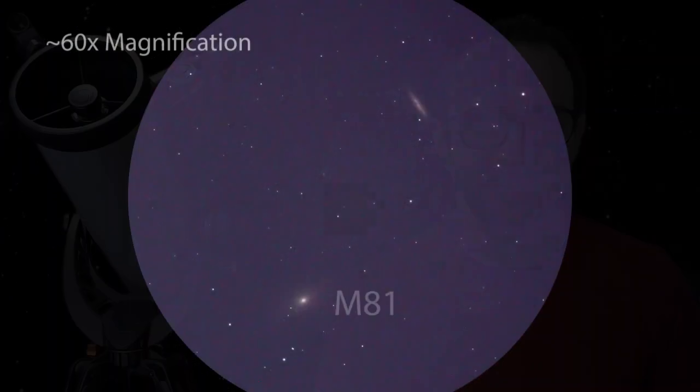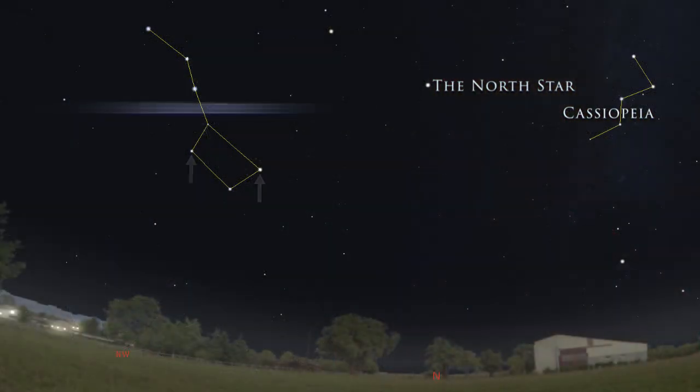These are galaxies M81 and M82. Now, for whatever reason, I've always found these galaxies to be the easiest galaxies to find in the entire sky. I even find them faster than I find Andromeda. All I do is line up these two stars here in the Big Dipper and double the distance.